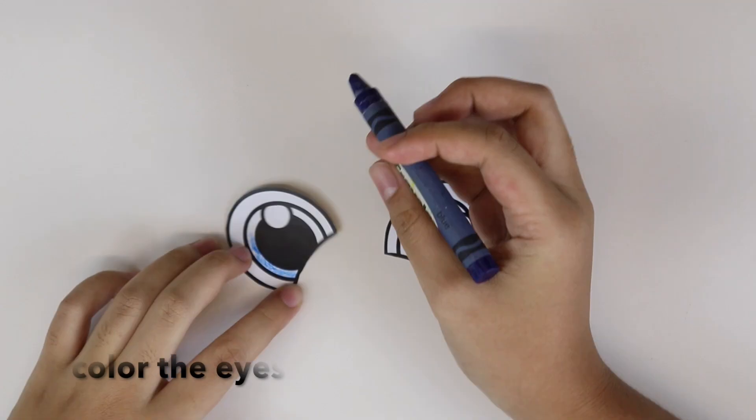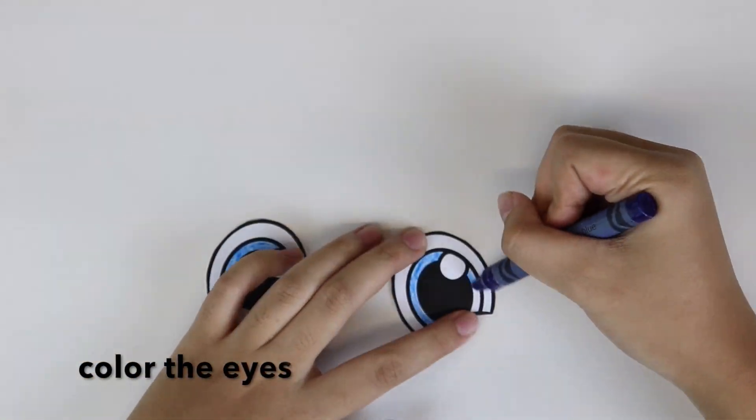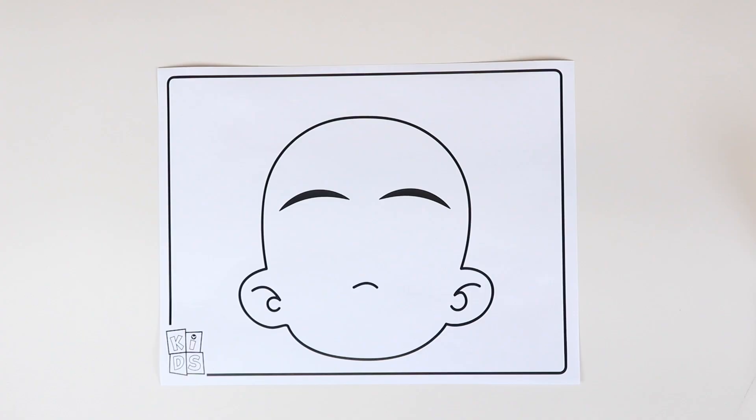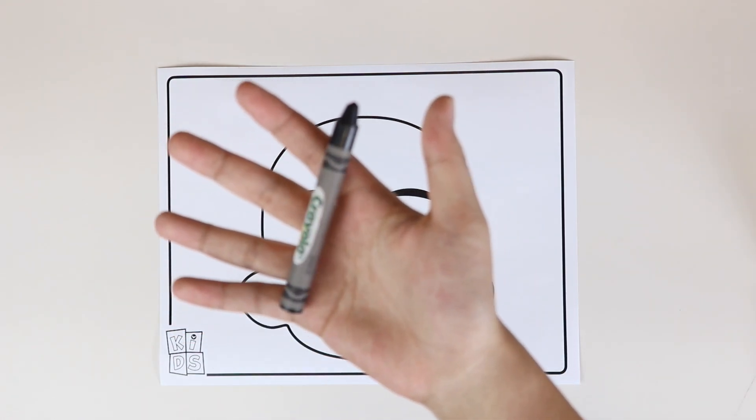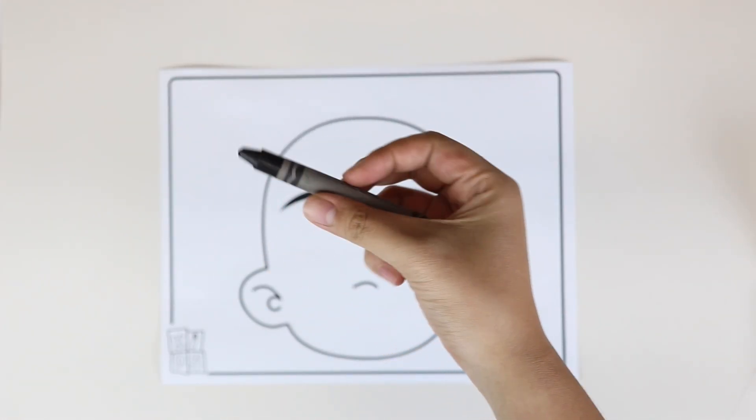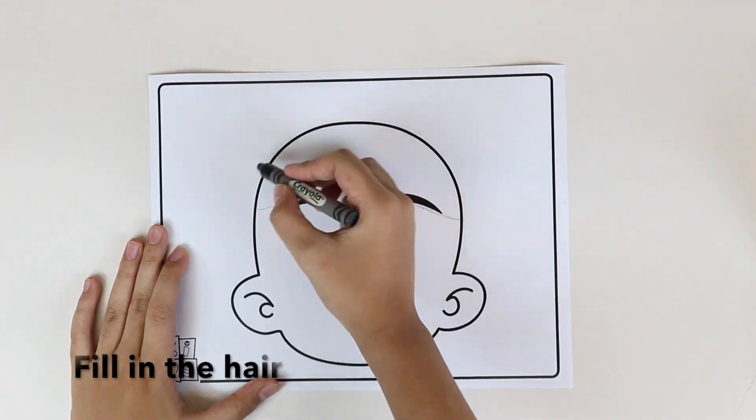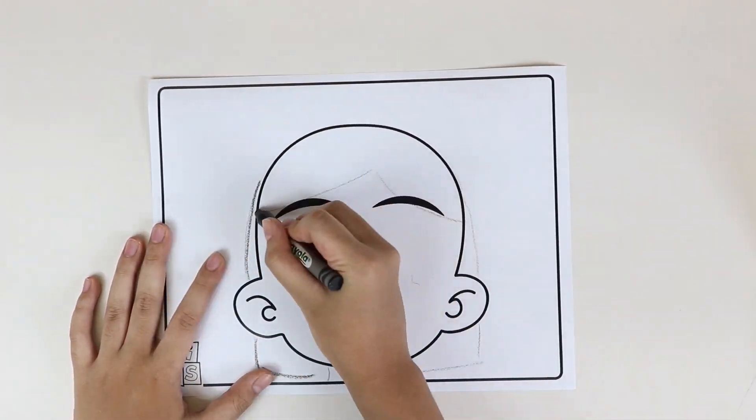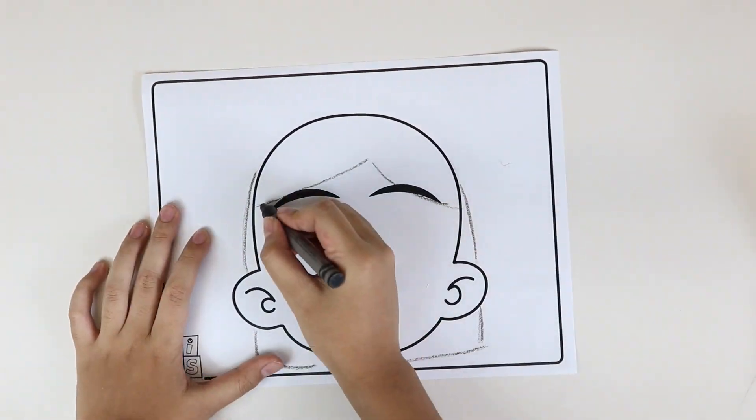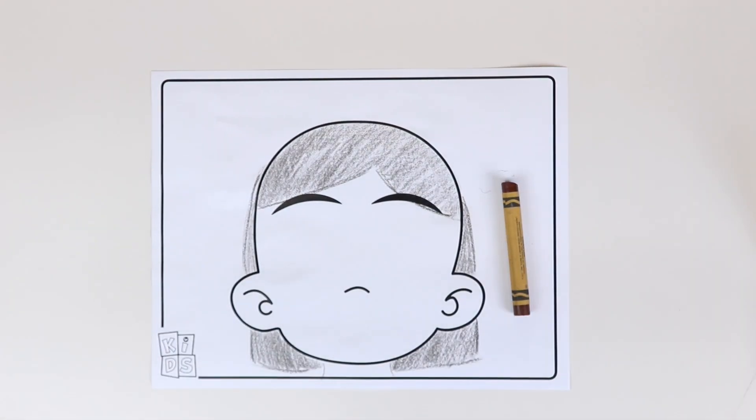Once the kids get their craft kits, ask them to color the eyes first. Next, ask them to design the hair in any way they want, and ask them to color the face in any color they want.